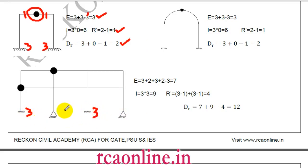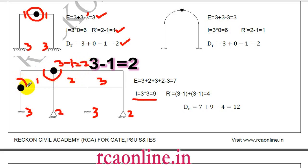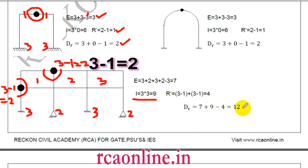Final problem: f equals 3+3+2+2 equals 10, u equals 3, E equals 7. Three closed loops give I equals 9. Two internal hinges: one with 3 members joined gives r equals 2, another with 3 members gives r equals 2, total r equals 4. Total indeterminacy equals 7 plus 9 minus 4 equals 12.